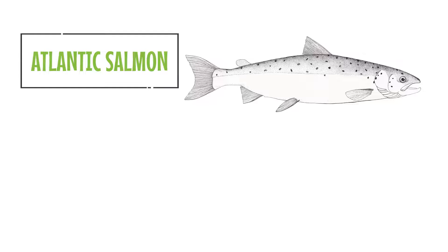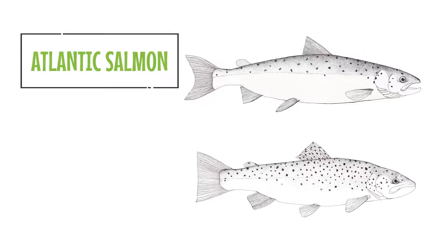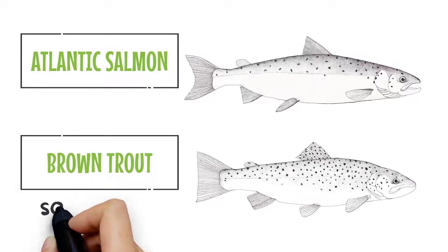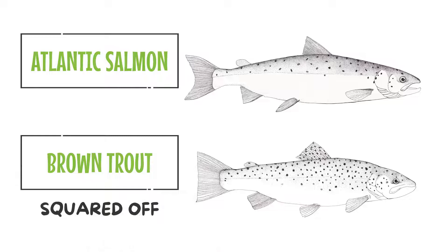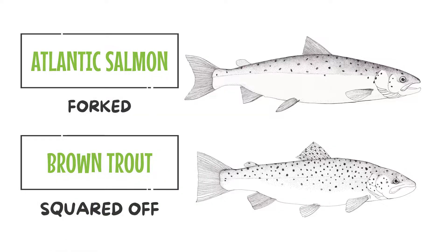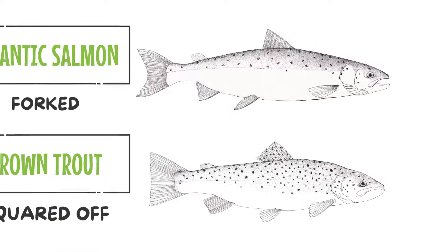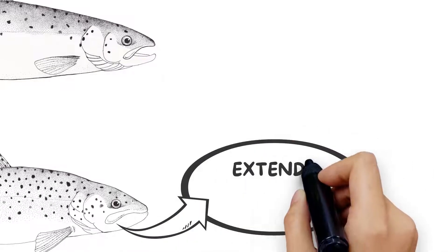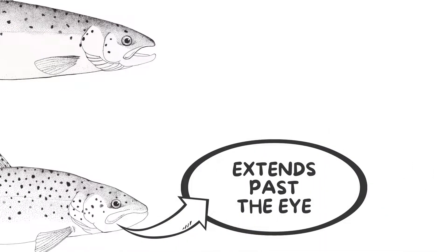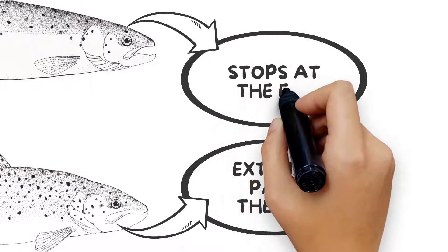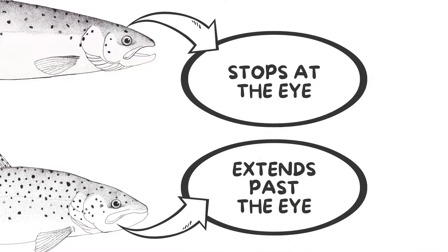To tell Atlantic salmon and brown trout apart, look at the shape of the tail. A brown trout tail is squared off whereas an Atlantic salmon tail fin is forked. The other key feature is the mouth which, when closed, extends past the eye in a brown trout but stops at the eye in an Atlantic salmon.